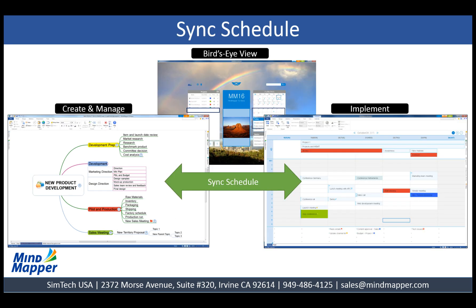Once linked, schedule on the map syncs with the schedule from the planner and vice versa, and any new schedule entries from the map will appear in the planner and new entries in the planner will appear on the map. This mechanism of going back and forth between project and planner is what makes Mindmapper 16 a unique tool that will help you manage goals and time more effectively, as you can view entire information on a map and implementational details in the planner.